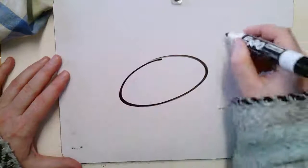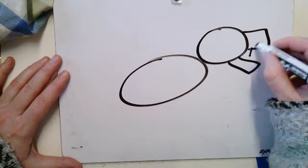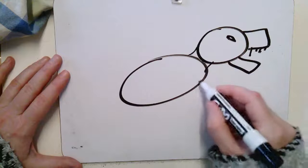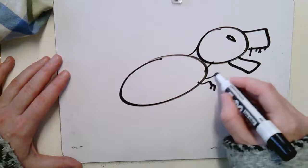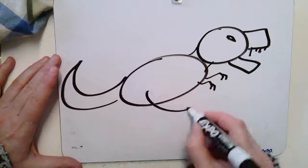Alright, T-Rex. Big guy. He has a big giant mouth, teeth, eyes, neck, tiny tiny little fingers, tail, legs, oval, oval.